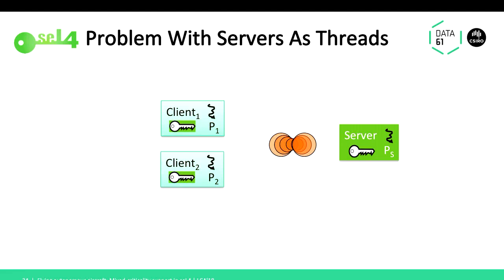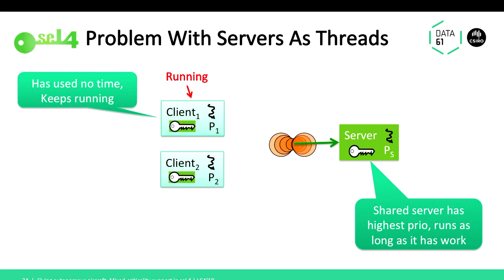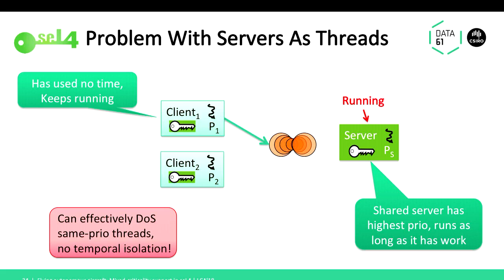However, in the existing seL4 kernel there is a problem. If two clients invoke the server, the first client sends a message, the server operates at highest priority and gets as much time as it wants. When it replies, the client hasn't used any time, so it still has its full time slice and immediately sends the next request. Basically that client can dominate the server and effectively DoS the other client. We need a way of preventing that.